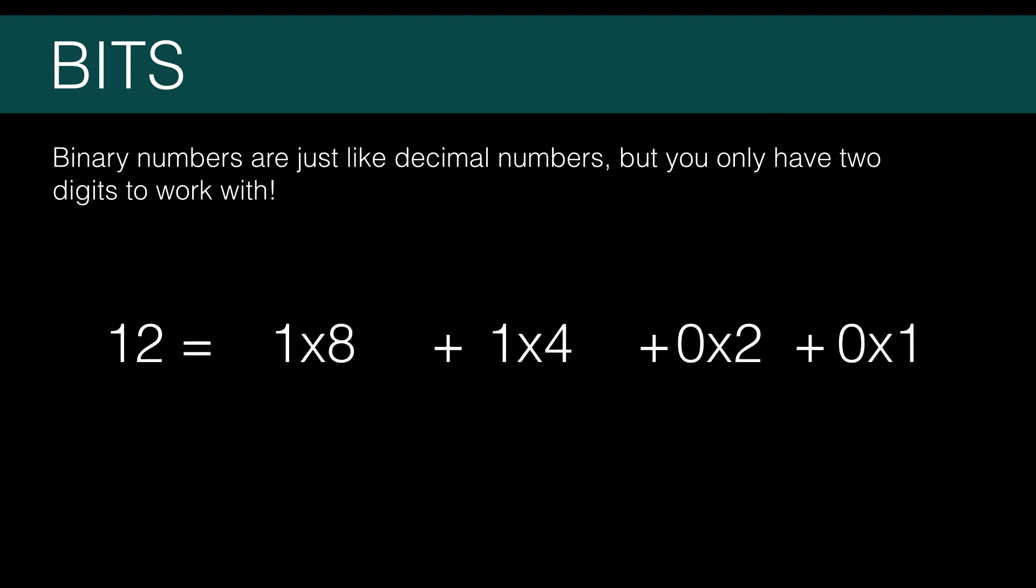So to represent 12 in binary, we have 1 times 8 plus 1 times 4 plus 0 times 2 plus 0 times 1. 8, 4, 2, and 1 are all powers of 2. So in the same way we represent decimal numbers, we can write 12 as 1100 in binary.